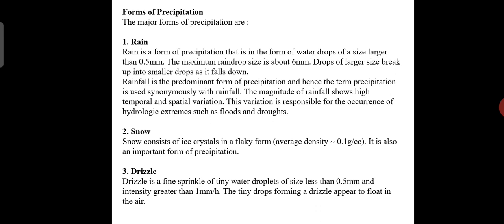The third is drizzle. Drizzle is a fine sprinkle of tiny water droplets of size less than 0.5 mm and intensity greater than 1 mm per hour. The tiny droplets forming drizzle appear to float in the air.